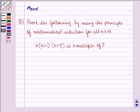Hello and welcome to the session. My name is Mansi and I am going to help you with the following question. The question says, prove the following by using the principle of mathematical induction for all n belonging to natural numbers: n(n+1)(n+5) is a multiple of 3.